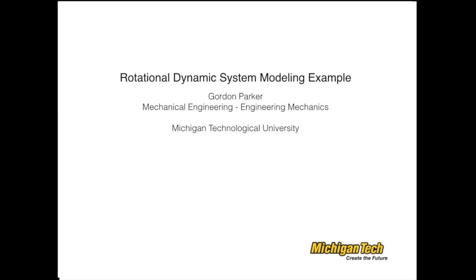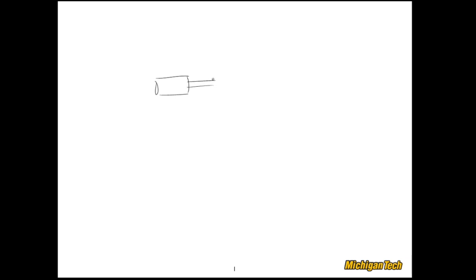Hi, this is Gordon Parker from Michigan Tech, and in this video I'm going to go over how to generate the differential equations for a rotational system. Let me draw a picture of it. We have a disk connected with a massless shaft to another disk. This one has inertia J1, this one has inertia Jm, and the massless shaft has a torsional spring coefficient of K1.